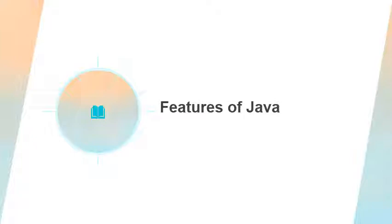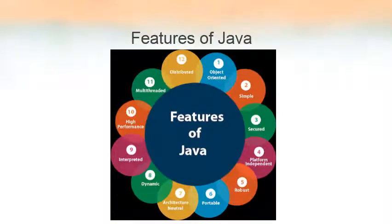Now, features or buzzwords in Java — we are going to see what the different features are. This figure represents altogether 12 features of Java. We will be explaining only the top five features. The features are: Java is object-oriented, simple, secured, platform independent, robust, portable, architectural neutral, dynamic, interpreted, high performance, multi-threaded, and distributed. We will focus on explaining the top five features.